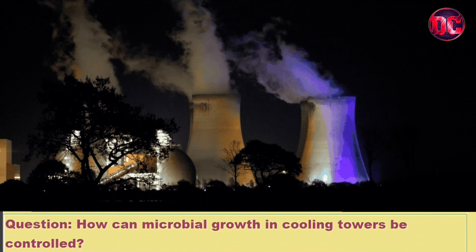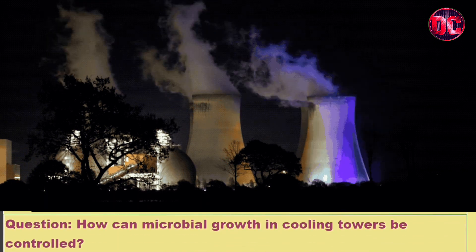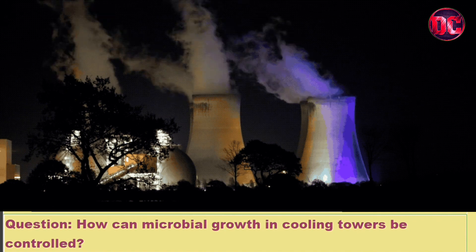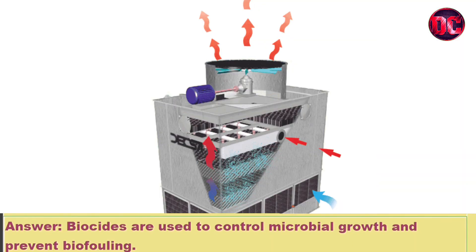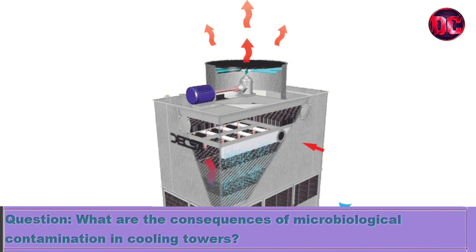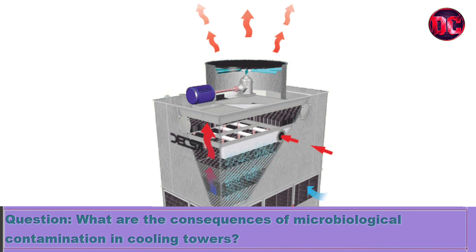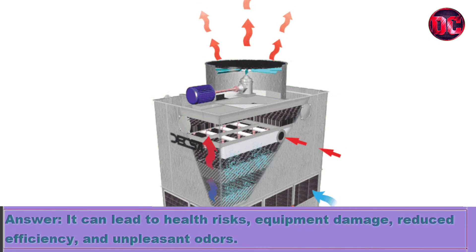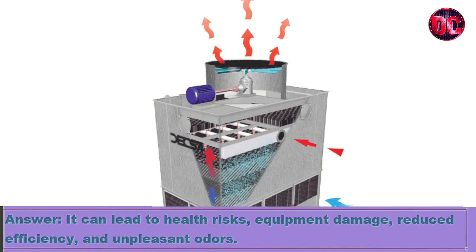Question: How can microbial growth in cooling towers be controlled? Answer: Biocides are used to control microbial growth and prevent biofouling. Question: What are the consequences of microbiological contamination in cooling towers? Answer: It can lead to health risks, equipment damage, reduced efficiency, and unpleasant odors.